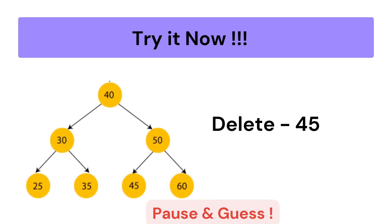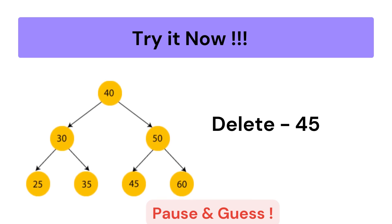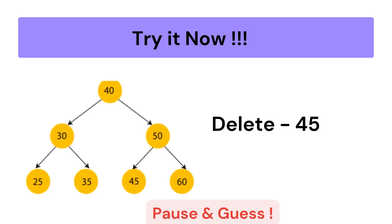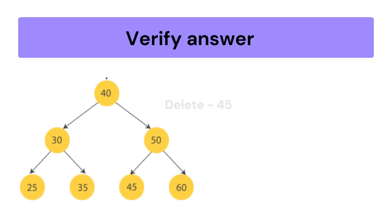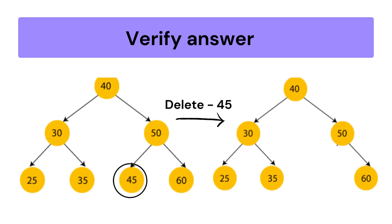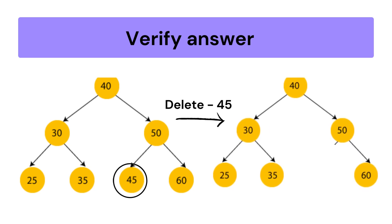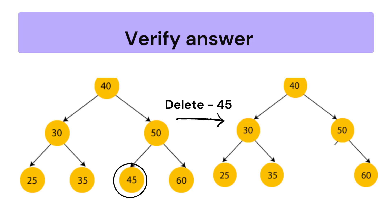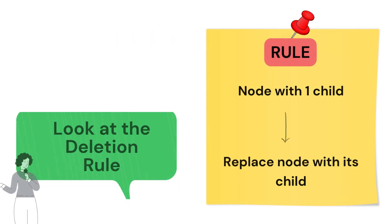Now pause and guess the answer. We have to search for node 45. We found node 45, so we check whether this node has any children or not. Node 45 is a leaf node, so we can easily delete it from the BST.